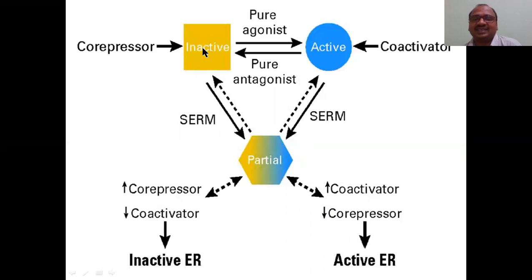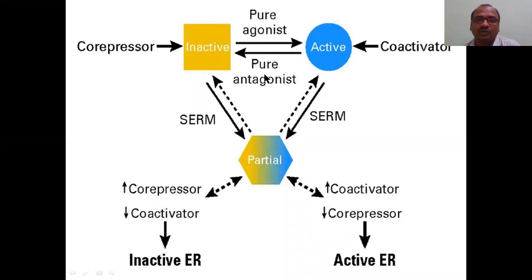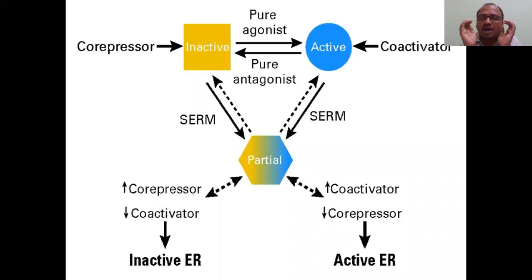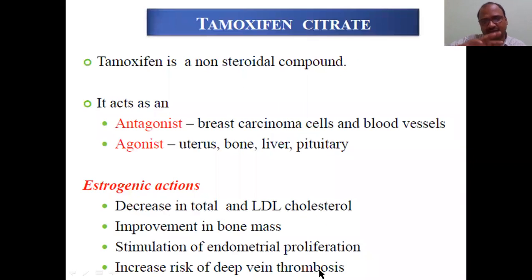Mechanism of SERMs: co-repressors suppress the estrogen receptor, making it inactive; co-activators activate the estrogen receptor, making it active. SERMs make a mix of both — partially active and partially inactive receptor. SERMs can convert either an active receptor or an inactive receptor into an optimized, partially active receptor. Finally, you get either inactive ER or active ER depending on the tissue.